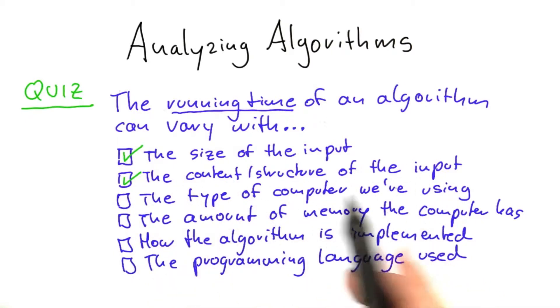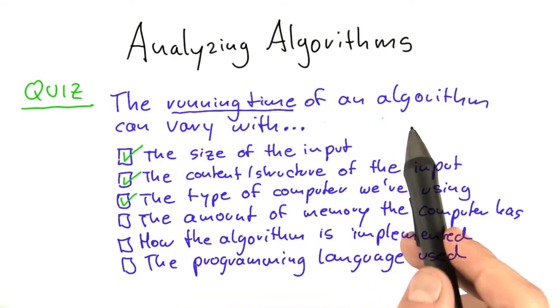Finally, the type of computer that we're using is also a very obvious one. If you're using a computer that is much faster, so say we're using a huge workstation instead of a simple laptop, then the algorithm will run much faster.